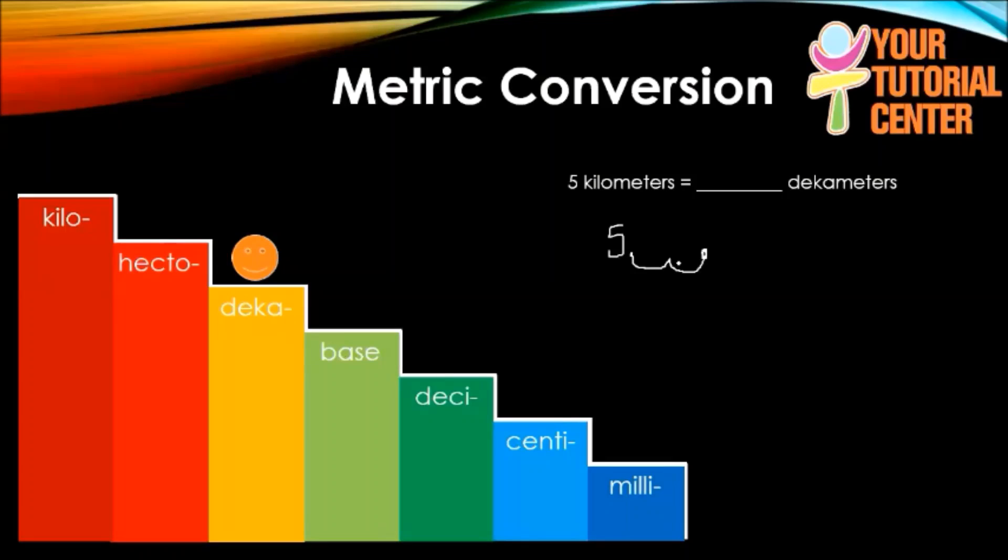For those spaces we just add zeros. We now have 500, so in this conversion five kilometers is equal to 500 decameters. That's how we use the ladder method. Let's look at some more examples.